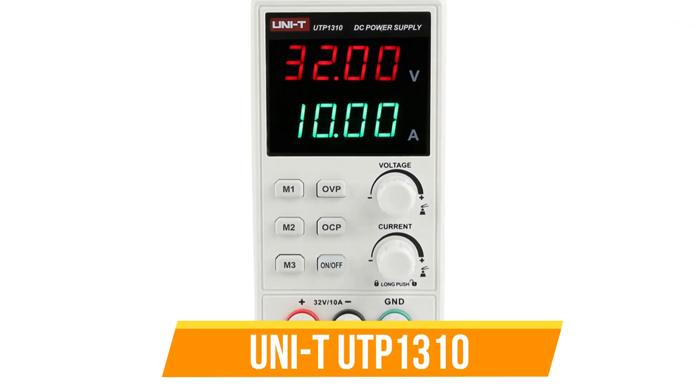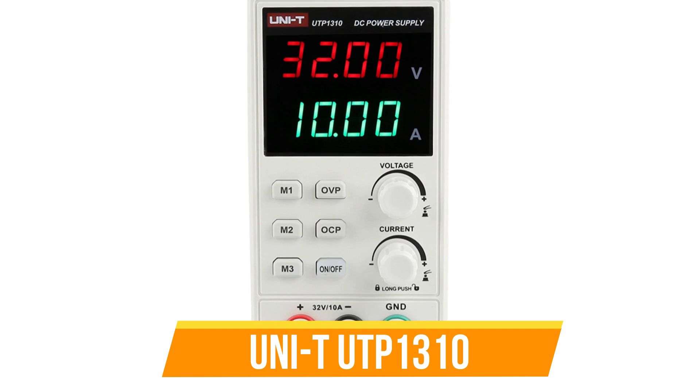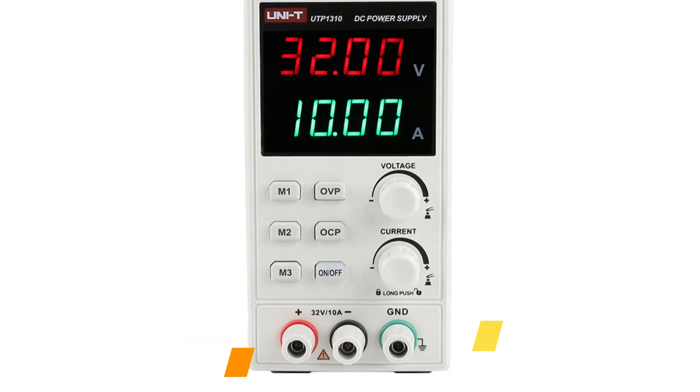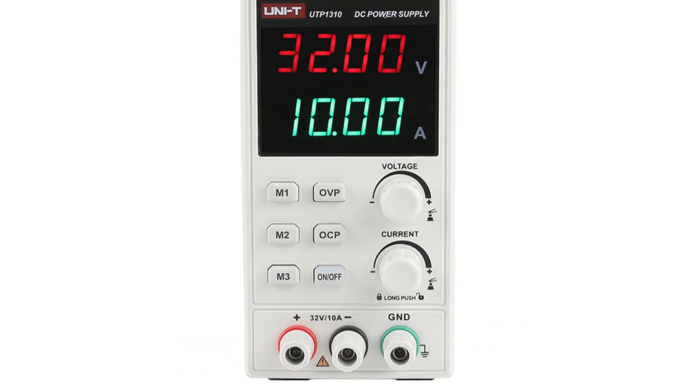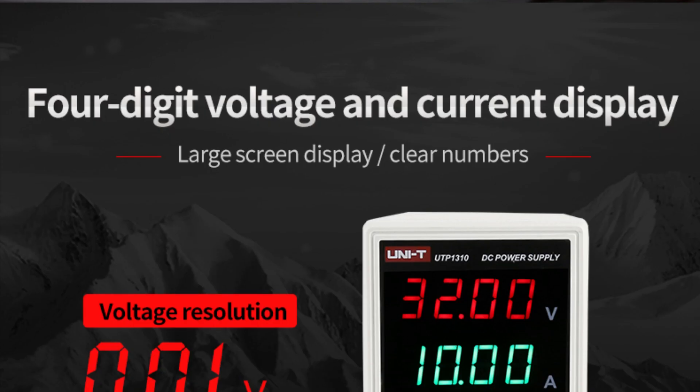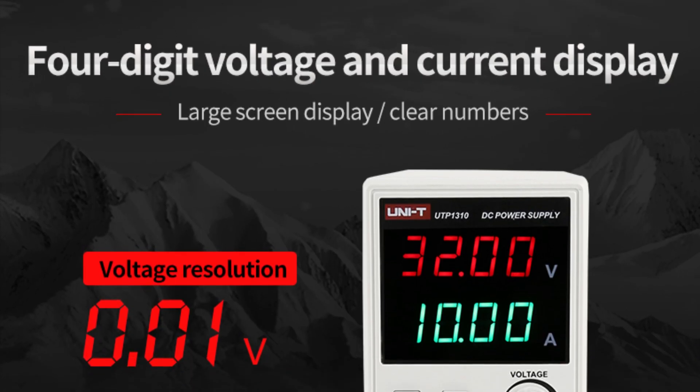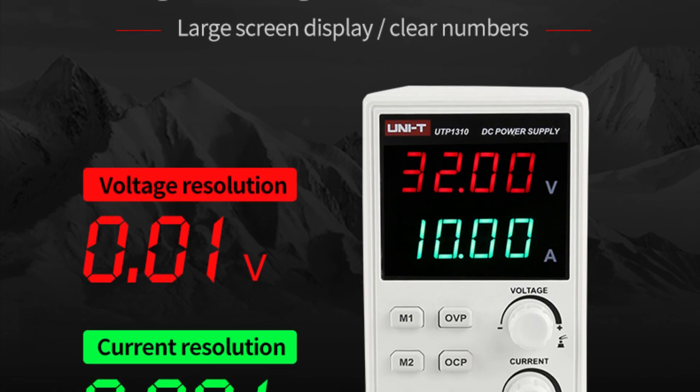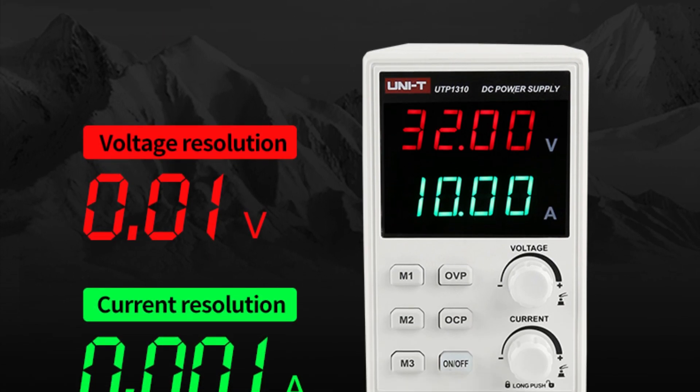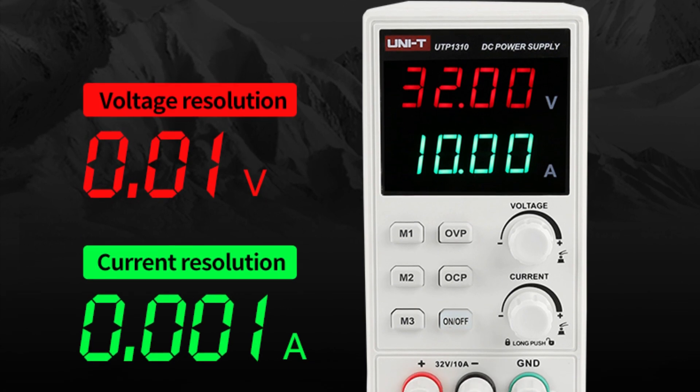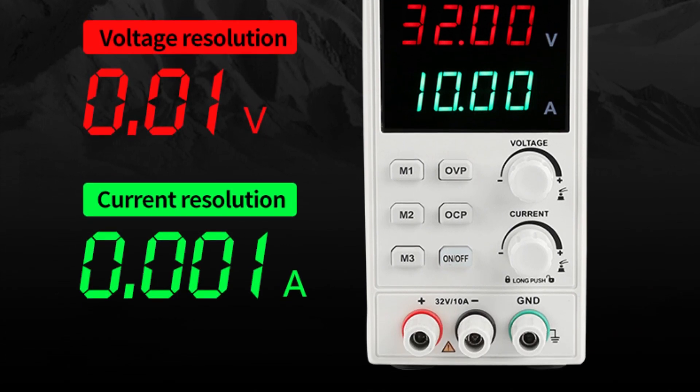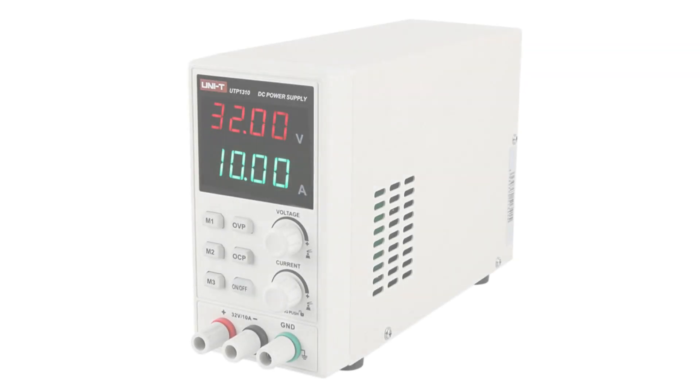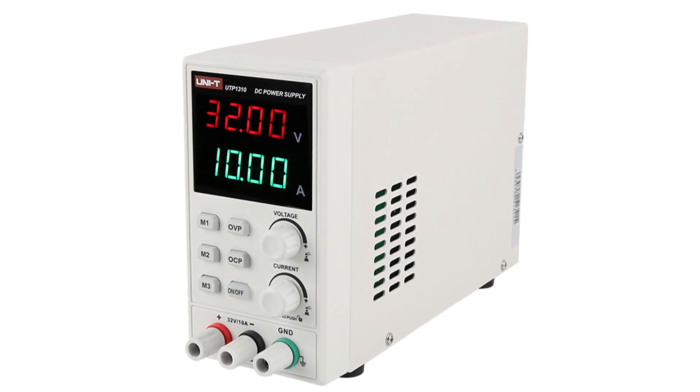Number 2: UNI-T UTP3010 DC Power Supply. The UNI-T UTP3010 DC Power Supply is a versatile and reliable device suitable for various electronic applications. It offers an adjustable output voltage range of 0 to 32 volts and a maximum current output of 10A, providing sufficient power for various devices. With a power output of 320W, it can handle demanding tasks like electronic circuitry, experiments, and testing equipment.